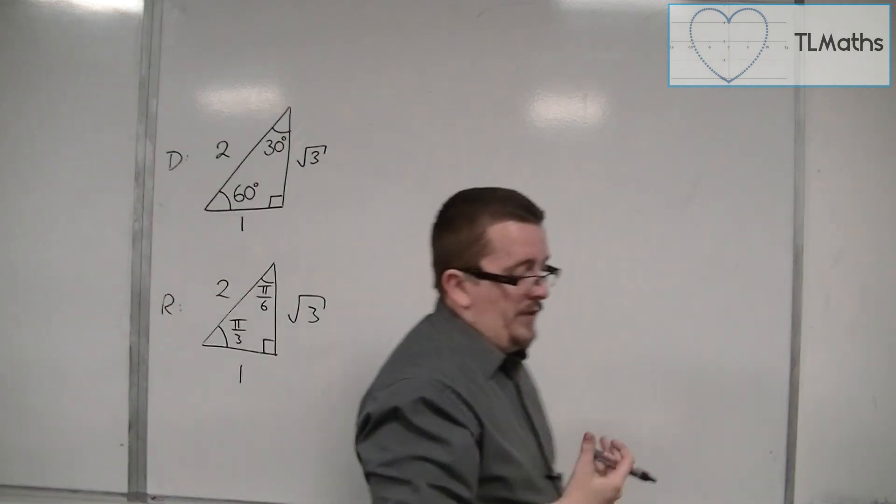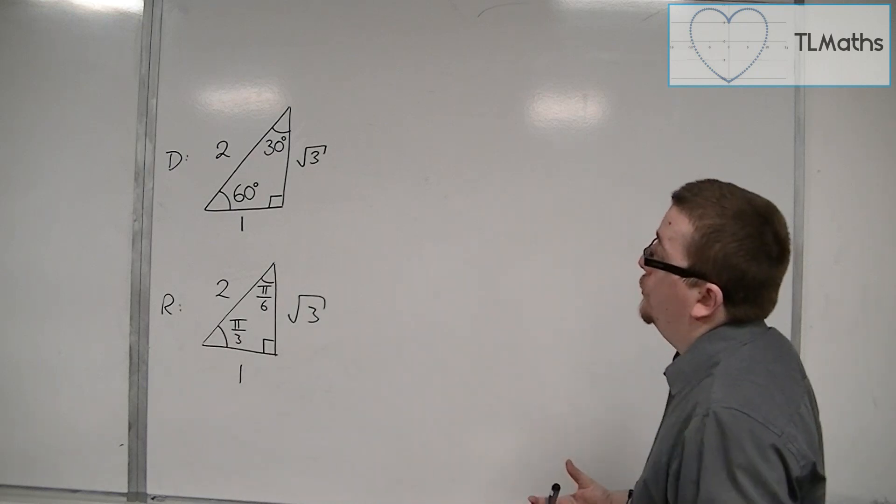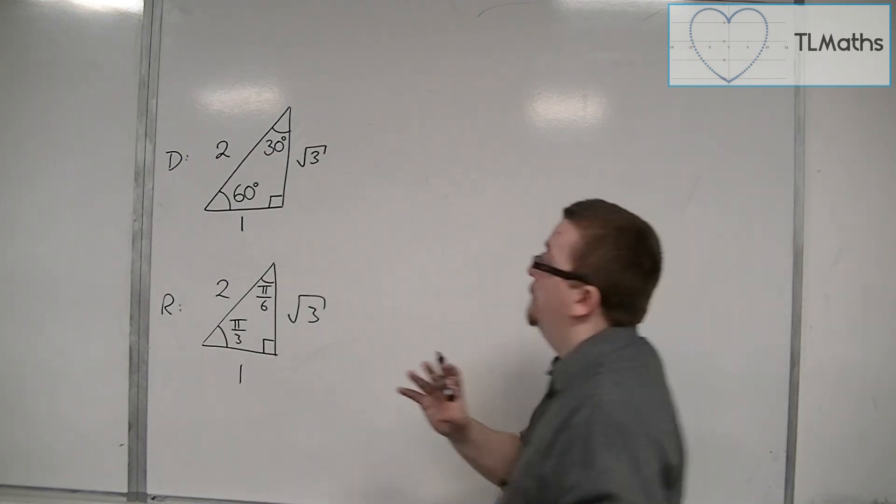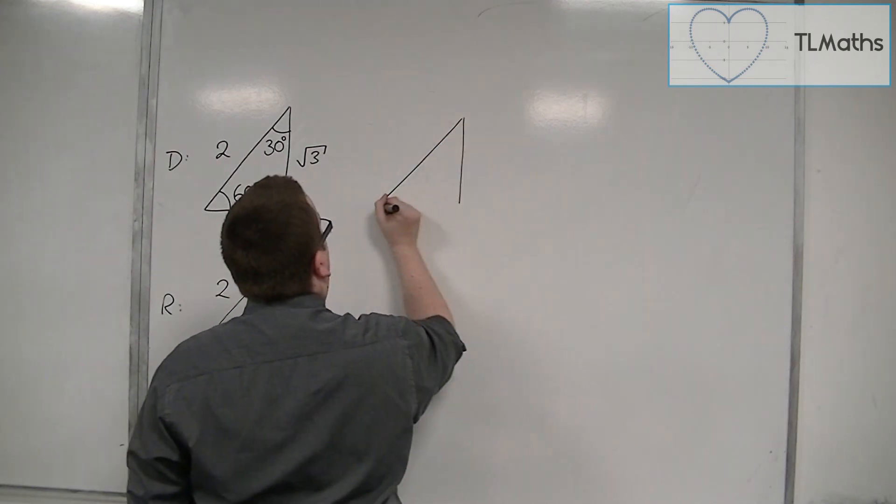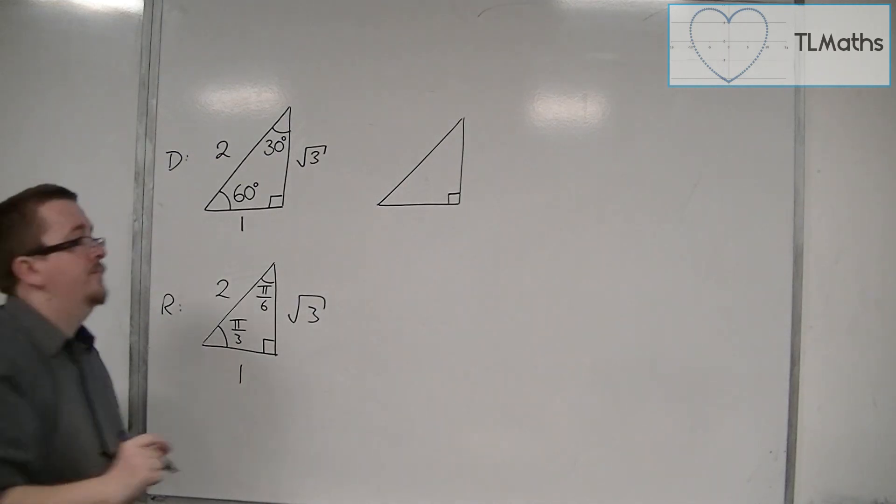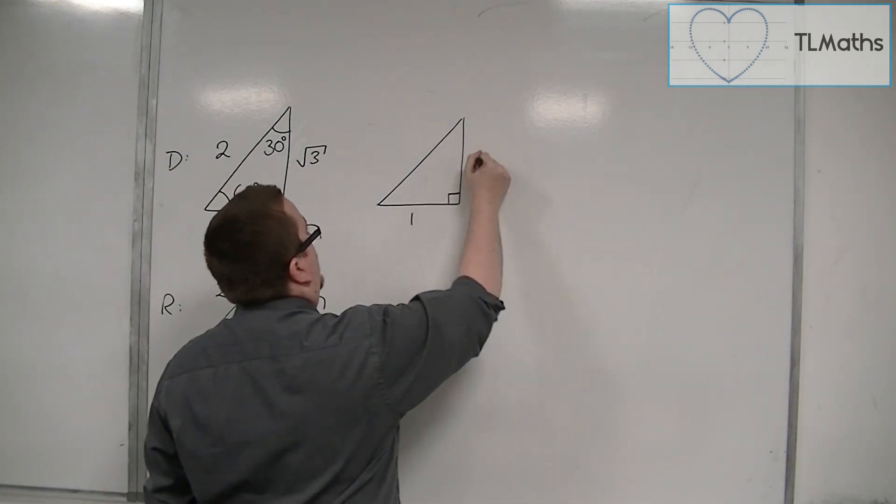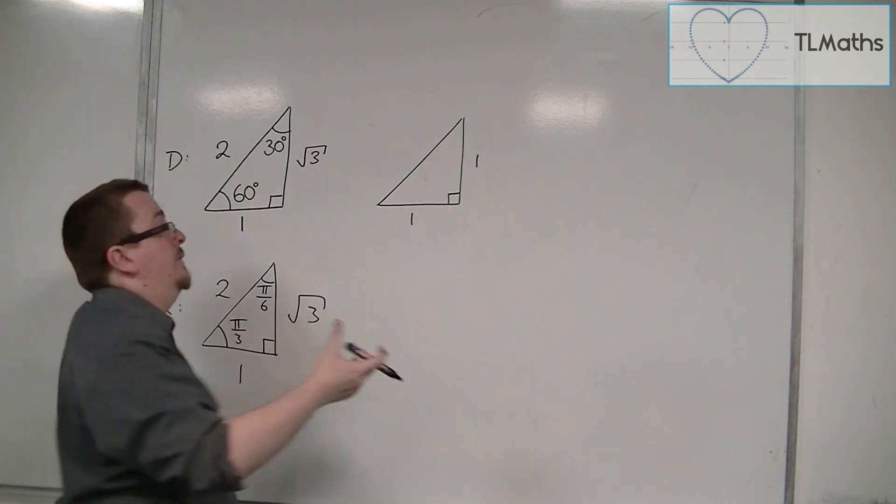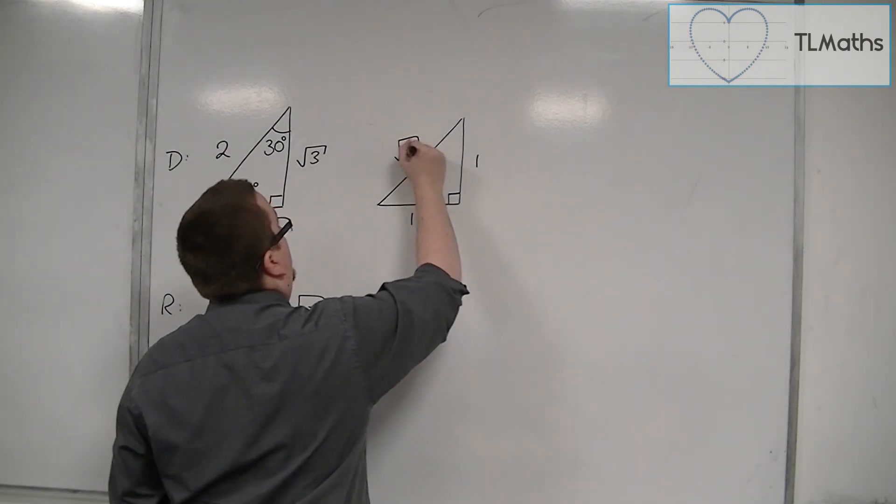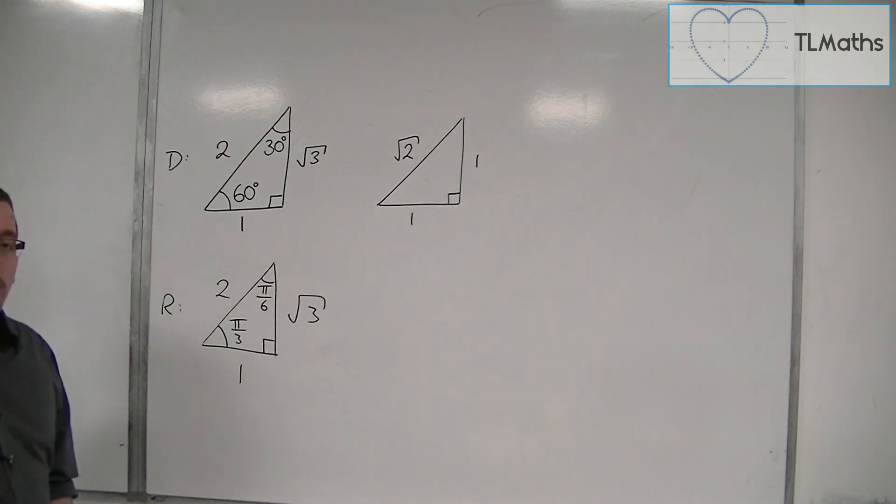Now, the other triangle, as I said, is also a right-angled triangle, but this one is isosceles. So it's an isosceles right-angled triangle, and this time it has two sides of length 1, and so the hypotenuse is of length root 2, using Pythagoras.